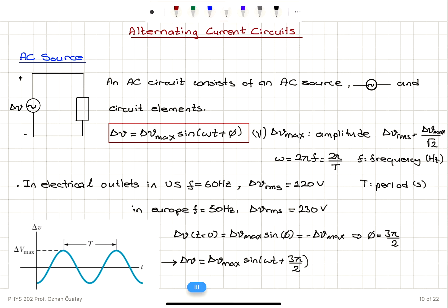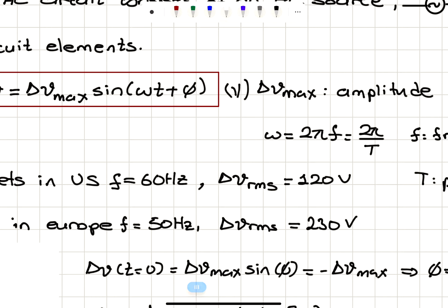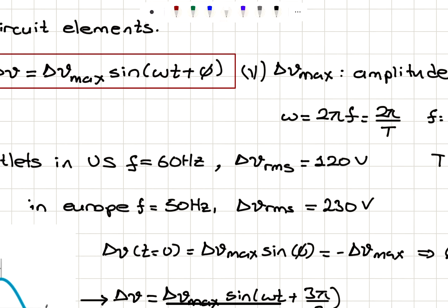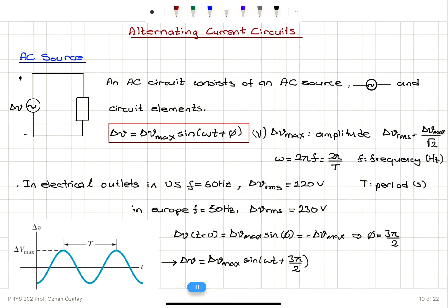When we compare power outlets in the US and Europe, we see a big difference. In the US, the frequency is 60 Hz and the RMS voltage output is 120 volts. In Europe, the frequency is 50 Hz and the RMS voltage output is 230 volts — roughly twice the US voltage — and the frequency differs: 60 Hz versus 50 Hz.